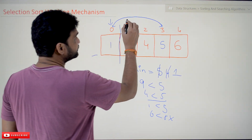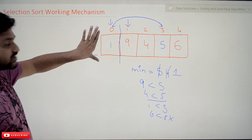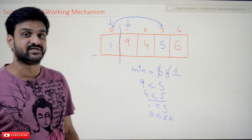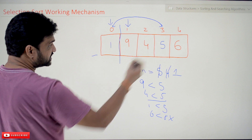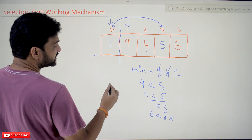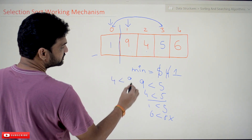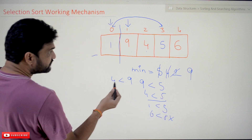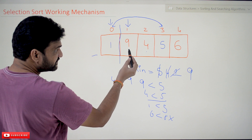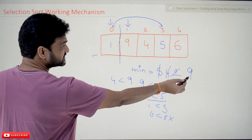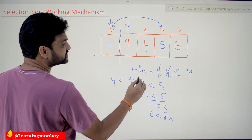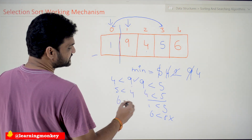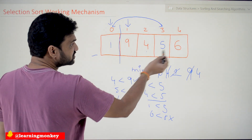In the second iteration we are not going to touch the sorted part. We move to the next position. We assume the element there — 9 — as the minimum element, and compare it with the remaining unsorted elements. Is 4 less than 9? Yes — so the new minimum element is 4. Is 5 less than 4? No. Is 6 less than 4? No. So the minimum among the remaining elements is 4.